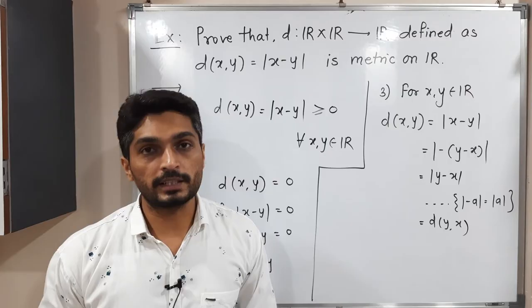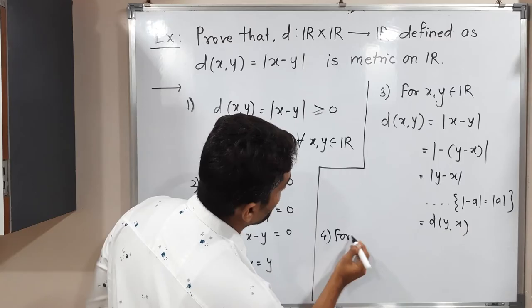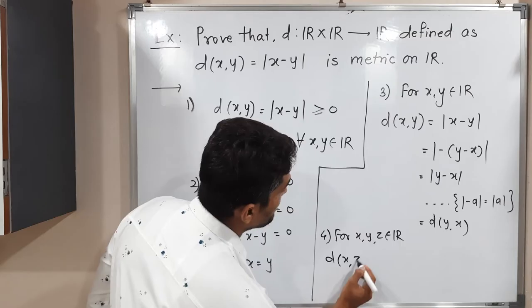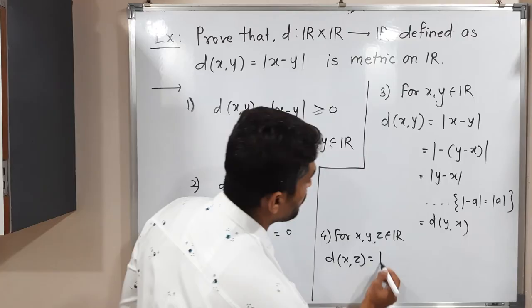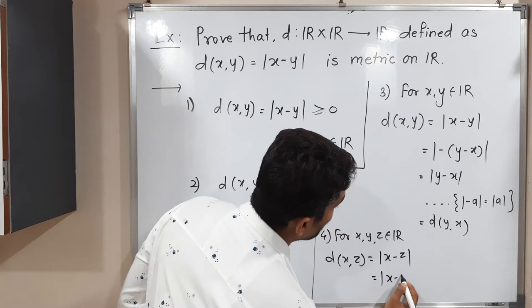Now let us prove the fourth property, triangle inequality. For x, y, z in R — since triangle inequality requires three points — we start with d(x, z). By definition, d(x, z) = |x − z|. We make a small adjustment by adding and subtracting y: this gives |x − y + y − z|.